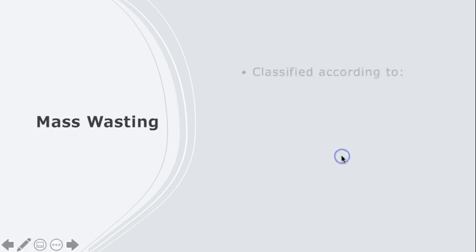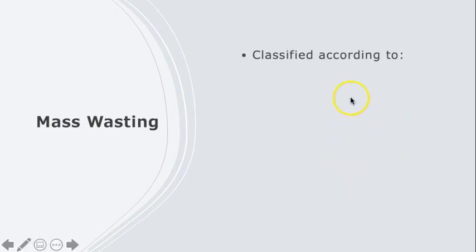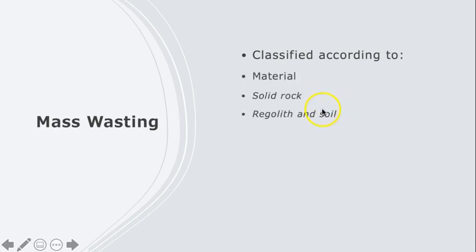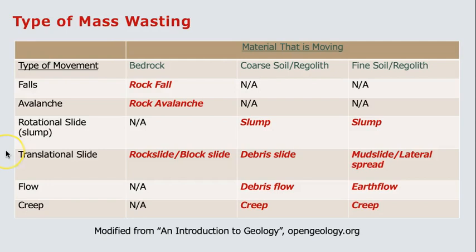They are classified according to the type of material that is moving, which is either solid rock or weathered rock called regolith, and according to how that material moves — whether it falls, slides, or flows. This table shows the most common types of landslides, arranged by the type of movement and material that is moving.